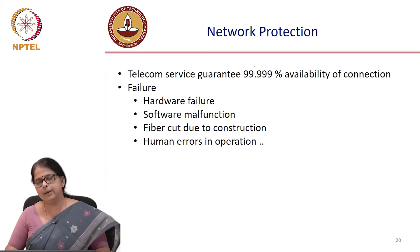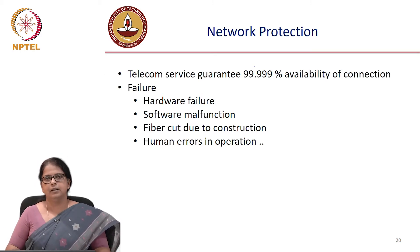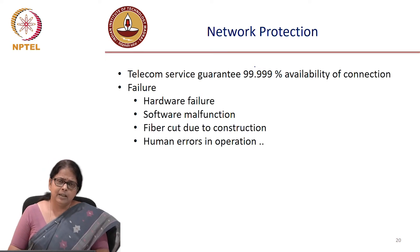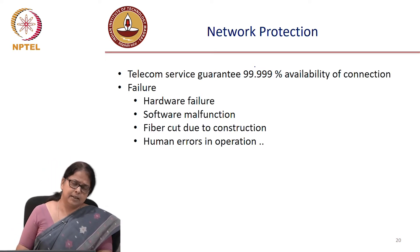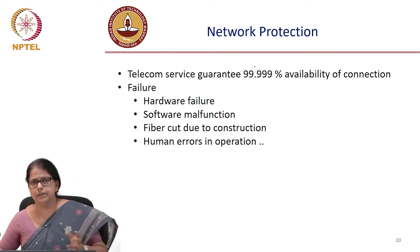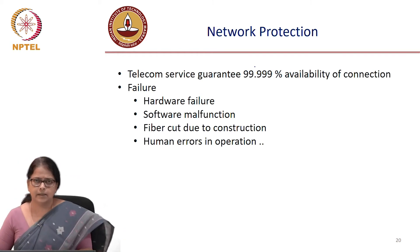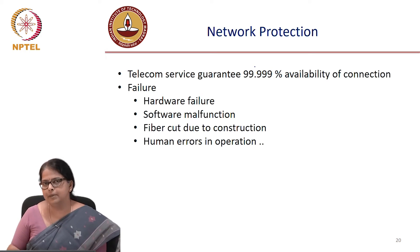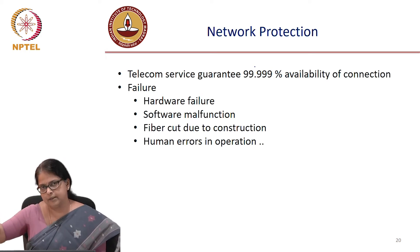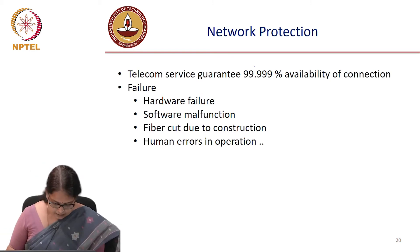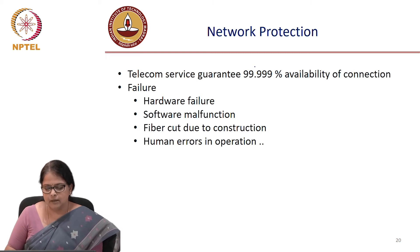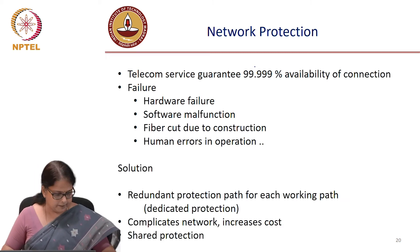The most dangerous fiber cut of course happens whenever there is a cut in a submarine link. In that case, the entire connectivity to the country probably gets disturbed. We have had such instances — a couple of instances in the past where submarine cables in different locations got cut. The other reason for failure of course is human error while operating.